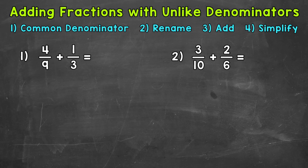When we add fractions, we need a common denominator. In other words, the bottom numbers need to be the same in order to add. For number one, we have a nine and a three, so we don't have a common denominator to start with, so we can't add quite yet. The first thing that we need to do is find a common denominator.